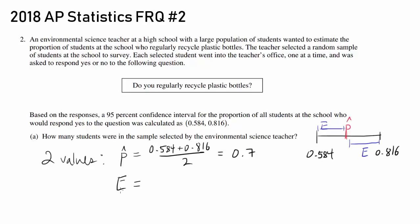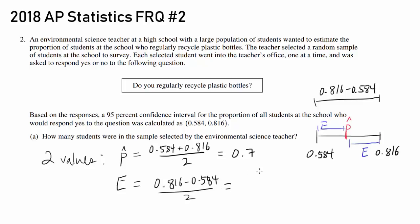And how about the margin of error? The entire length of the interval is 0.816 minus 0.584, and to find the margin of error you simply divide that by 2. So you subtract and divide by 2, and you should get 0.116. Knowing these, we want to calculate the sample size — how can we relate the sample size, the sample proportion, and the margin of error?